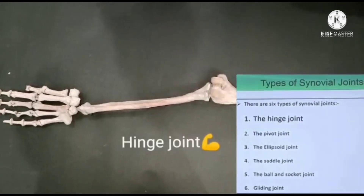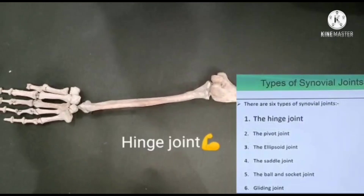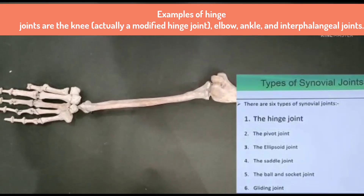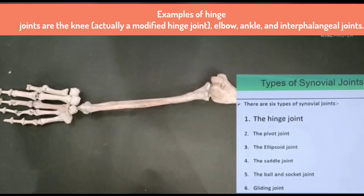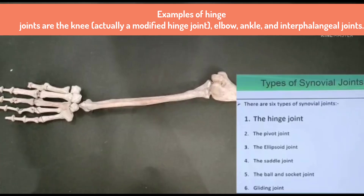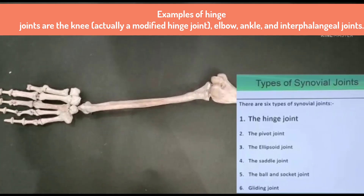The first one is the hinge joint, the pivot joint, the ellipsoid joint, the saddle joint, the ball and socket joint, and the last one is the gliding joint.